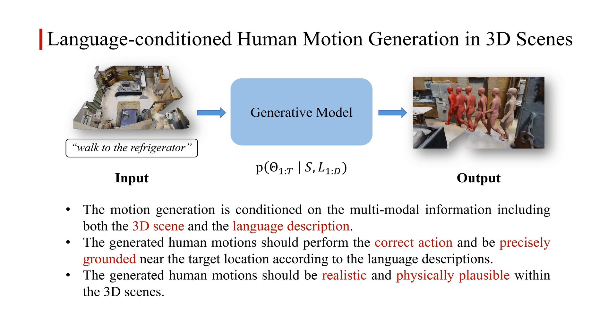Based on Humanize, we introduce a new task: language-conditioned human motion generation in 3D scenes. The input is a 3D scene and a language description for the desired interaction. The output is a realistic human motion sequence that is semantically consistent with the language description and physically plausible in the scene.